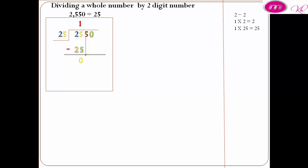5 divided by 25 we cannot make this division. 5 is less than 25, so we put 0 above 5 and bring down 0.